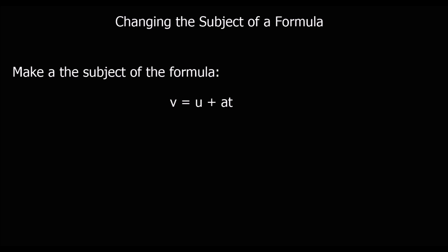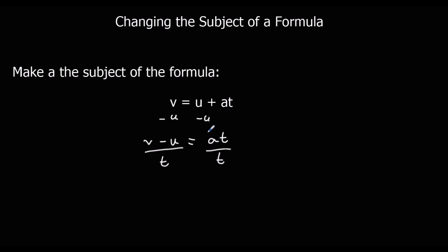Here's another question — make A the subject of the formula. I'm going to get rid of the U, so I'm going to minus U. If I minus it from this side, I've got to minus it from the other side as well. So I've got V minus U equals AT. I want A by itself, so I want to get rid of the T. It's times at the moment, so I'm going to divide both sides by T. That leaves me with A equals V minus U over T. So A is the subject of the formula — that's what we wanted.